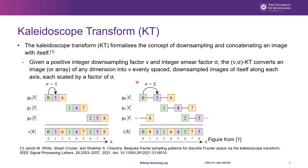I'll begin by defining the Collidoscope Transform. The Collidoscope Transform formalizes the concept of downsampling and concatenating an image with itself. It converts an image or array of any dimension into evenly spaced, downsampled images of itself along each axis, each scaled by a given smear factor. Interested readers are encouraged to have a look at the referred paper which first proposed the Collidoscope Transform.